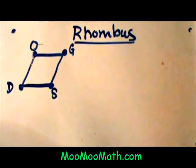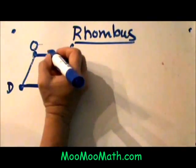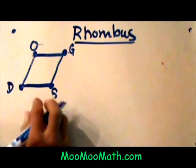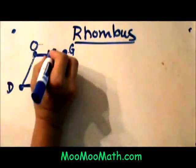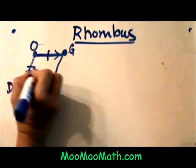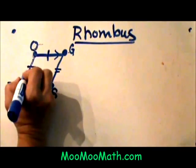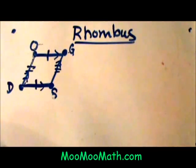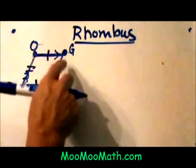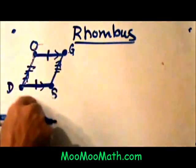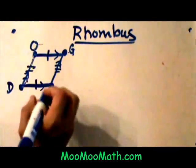Since a rhombus is a parallelogram, it does have all the properties of a parallelogram. It has opposite sides OG and DS which are congruent and also parallel, and DO and SG are also congruent to each other and also parallel. What sets a rhombus apart is that not only are these opposite sides congruent top to bottom and left to right, but all four sides are congruent.